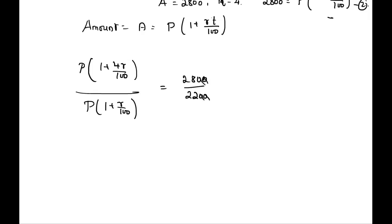We can cancel P from both equations. So (100 plus 4R) divided by (100 plus R) equals 28 by 22. We can further simplify this as 14 by 11.